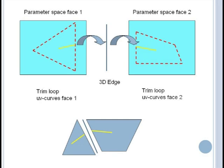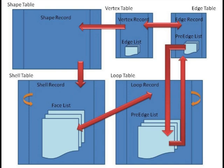The final structure will look something like this in the database. A shape record points to the set of shell records. Each shell contains a list of its boundary faces. Each face points to a list of loops, which form the inner and outer boundary of the face on the surface. Each loop contains a list of pre-edges or UV curves, each of which points to its associated edge. And finally, the edge points to any vertices at the extreme ends of its domain.